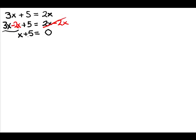Now we're ready to solve — it only has one piece to get rid of. We need to get rid of the 5. It's added, so we will subtract. Then 3x minus 2x gives us x plus 5 equals 0. Clean up and we get x equals negative 5.